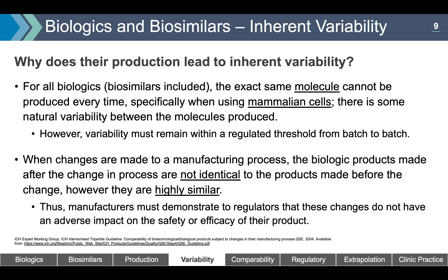Variability must remain within a regulated threshold from batch to batch. The approval of the process of making a biologic sets boundaries on how much variability is allowed in order for it to be considered comparable or highly similar to the approved biologic medication. When changes are made to the manufacturing process, the biologic products made after the change are not identical to those made before the change. However, they are highly similar, and manufacturers must demonstrate to regulators that these changes do not have an adverse impact on the safety or efficacy of their product.